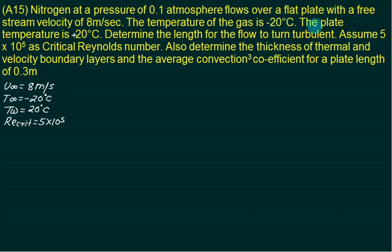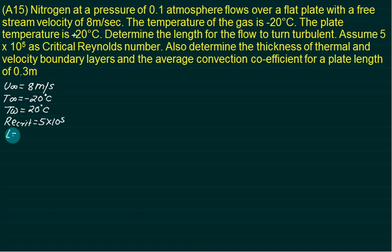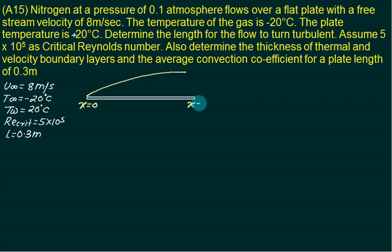Problem 2: Nitrogen at a pressure of 0.01 atmosphere flows over a flat plate with a velocity of 8 m/s. Gas temperature is −20°C and plate temperature is +20°C. Find the length of the plate for the flow to become turbulent (critical Re = 5 × 10⁵), and find delta_hx and delta_tx, as well as the average heat transfer coefficient for a plate length of 0.3 m. The leading edge is at x = 0 and the trailing edge is at x = L.